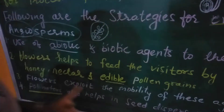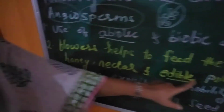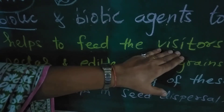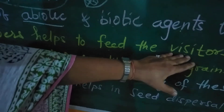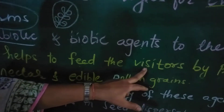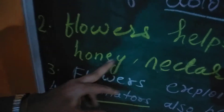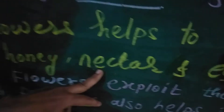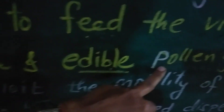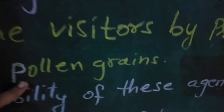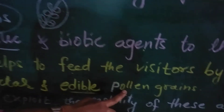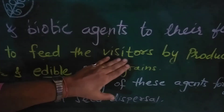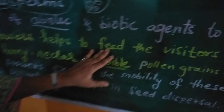Flowers help to feed the visitors by producing honey, nectar, and edible pollen grains. These visitors are also called pollinators or agents. Nectar is a sweet substance produced by the flower, and birds and insects can eat the pollen grains, which is why we call them edible pollen grains. In this way, visitors are fed by the flowers.